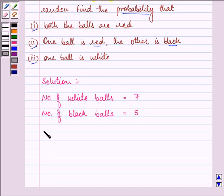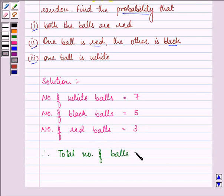And then, we are given number of red balls as 3. So this means total number of balls will be equal to 7 plus 5 plus 3. That gives us 15.